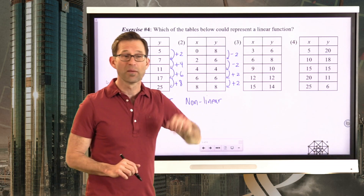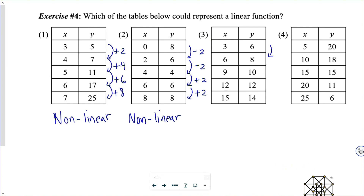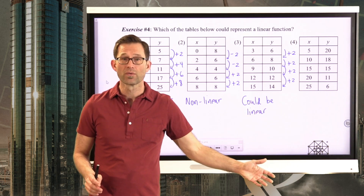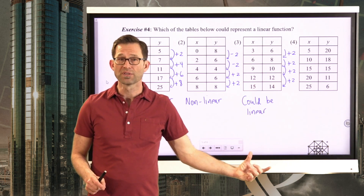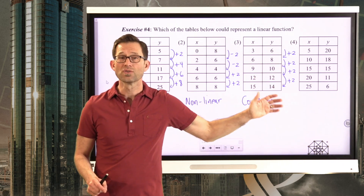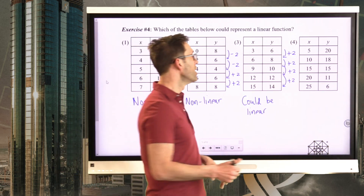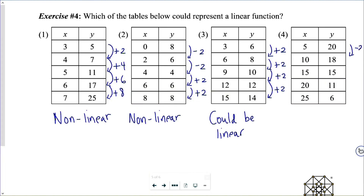Looking at table three: here I add 2, then add 2, then add 2, then add 2. This one could be linear. By the way, the reason I can't say it definitively is linear is because this isn't necessarily the entire function — maybe there are more data values where this constant change of plus 2 wouldn't hold.